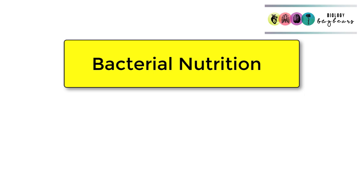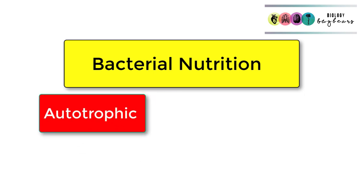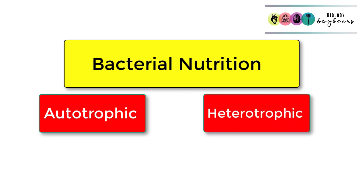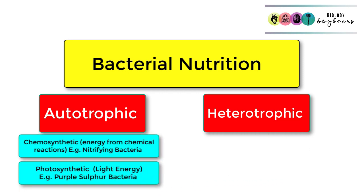Bacteria can either make their own food so they're autotrophic, and then there are other varieties that are heterotrophic. They cannot make their own food and they have to take in food made by another organism. Autotrophic bacteria can be chemosynthetic varieties where they use energy released from chemical reactions to make their food, for example the nitrifying bacteria in the nitrogen cycle.